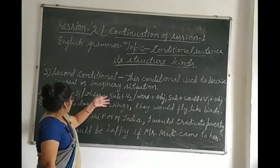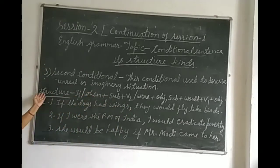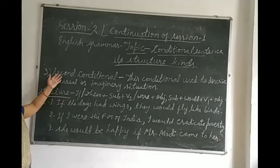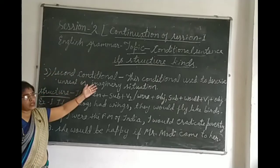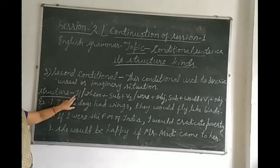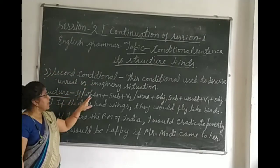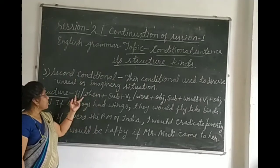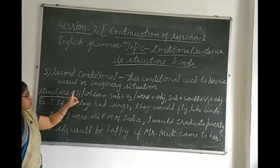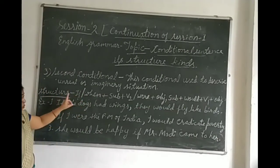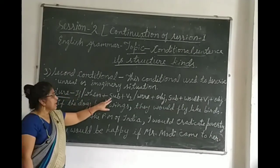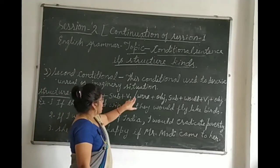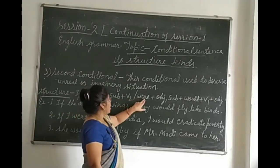Now let us discuss the structure of the second conditional. The structure is: if — plus subject — plus past simple verb. Here, out of these two options we have to use one — then subject, then would.